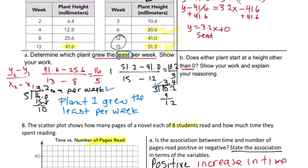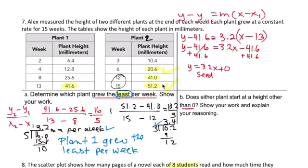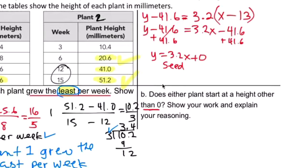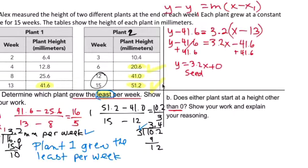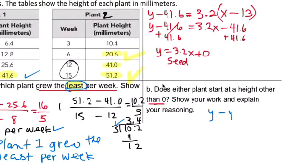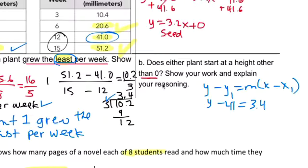Do this on your own. You need to do point slope. Y minus y sub one equals m times parenthesis x minus x sub one. So y minus y sub one would be 41. The slope of this was 3.4 right here. X minus 12. I think this one starts at a decimal, so plant number two.